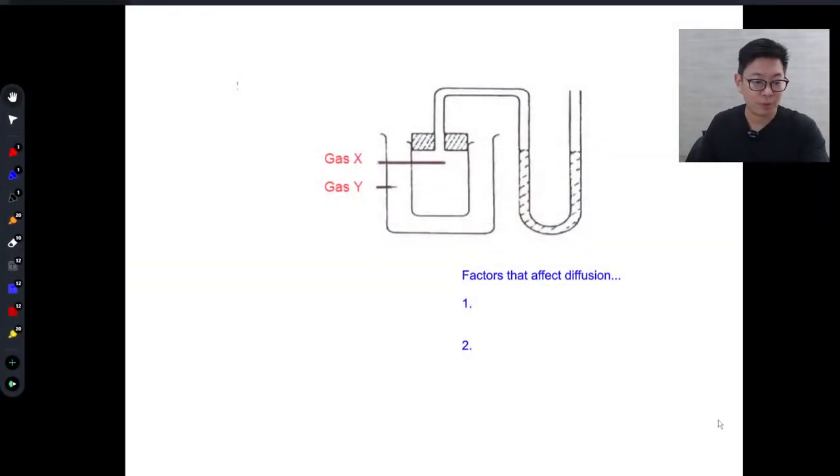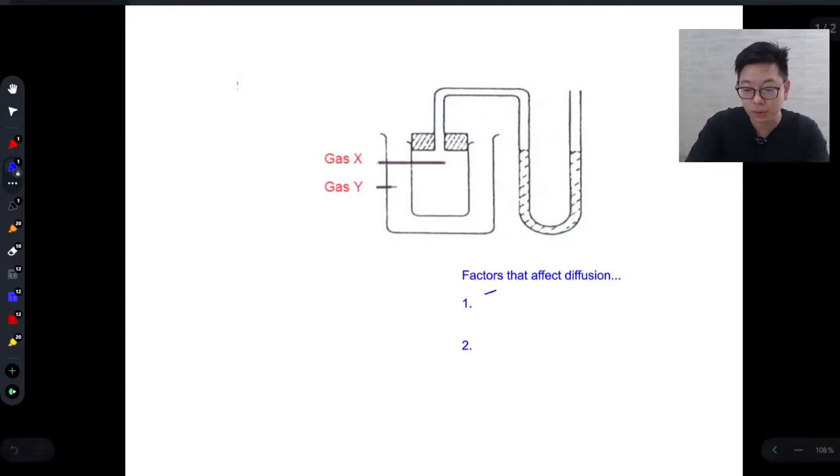So here you're given a porous pot, but before we do that, let's talk about some factors that affect diffusion. There are actually only two. The first one is temperature and the second one is relative molecular mass or MR for short.